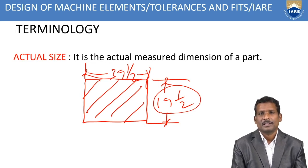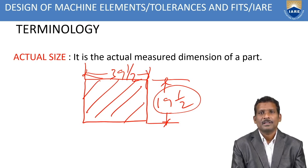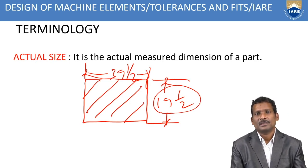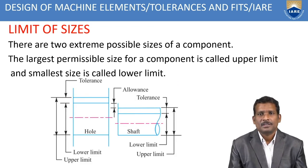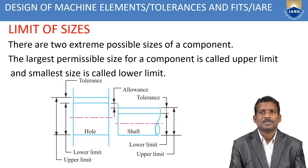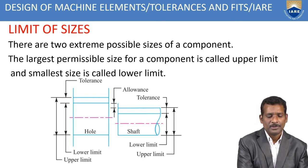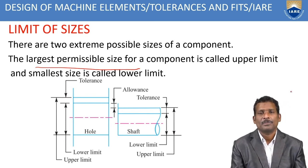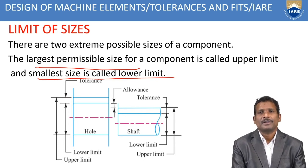Due to manufacturing errors this difference may occur. That is why you have to apply some tolerances on the product. The next terminology is limit of sizes — there are two extreme possible sizes of a component. The largest permissible size is called the upper limit, and the smallest size is called the lower limit, as shown in the figure.